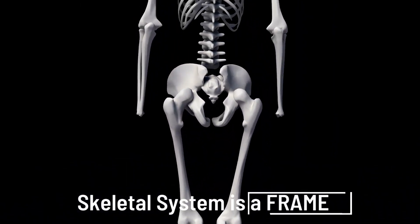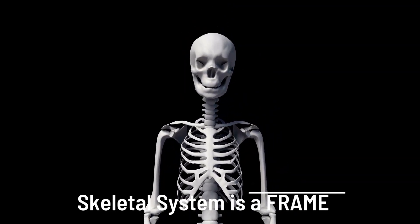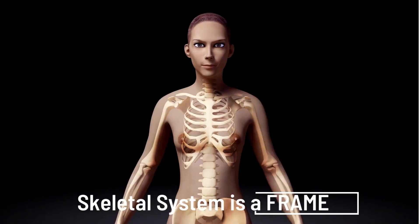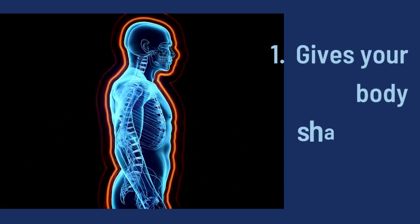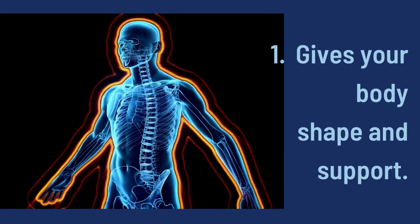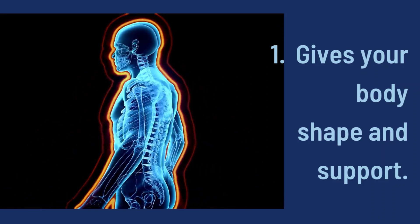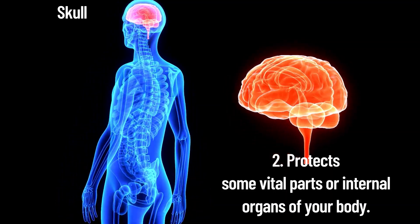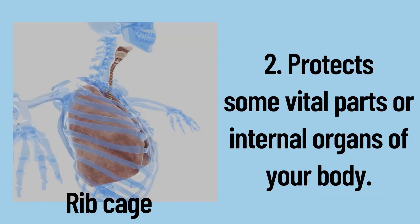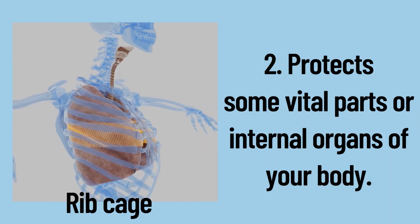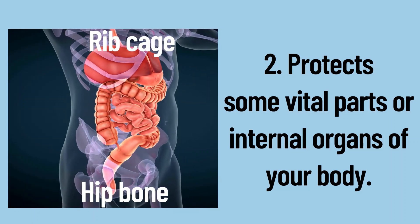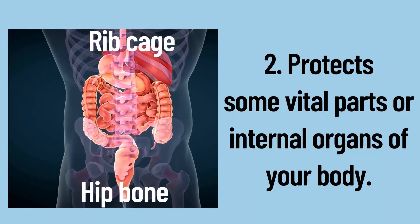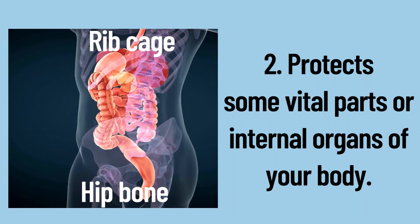The musculoskeletal system is like a frame — the frame of our body. Its first function is that it gives your body shape and support: you can sit down and stand up because of the support of our skeletal system. It also protects vital internal organs — for example, our brain is protected by the skull, our lungs are protected by the ribcage, and internal organs like the stomach and intestines are protected by the hip bone.